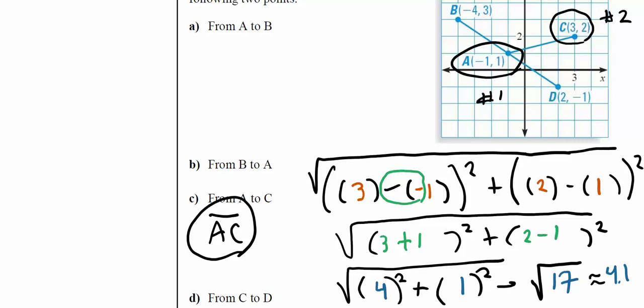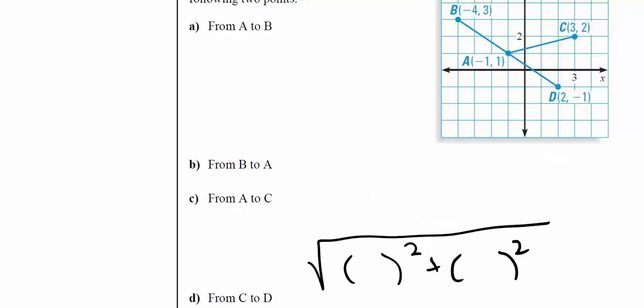What we're saying is the distance from A to C, line segment AC, is actually slightly bigger than from A to B.